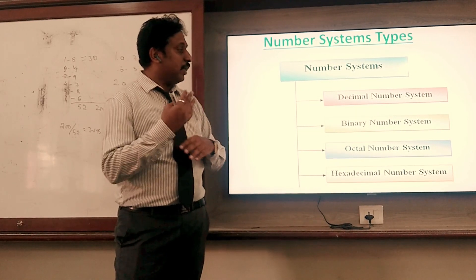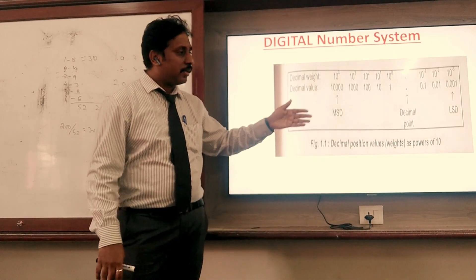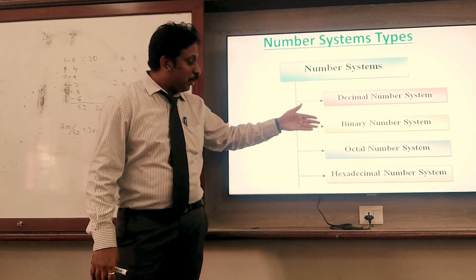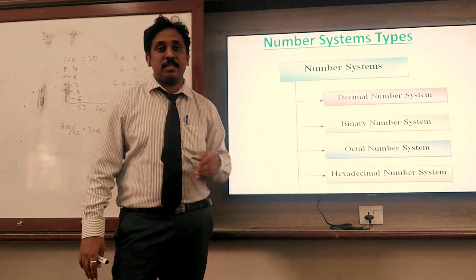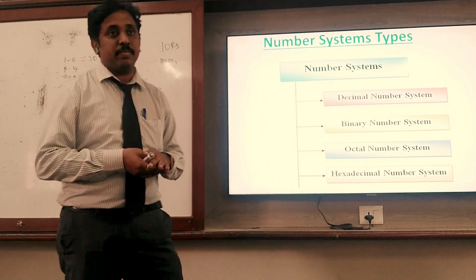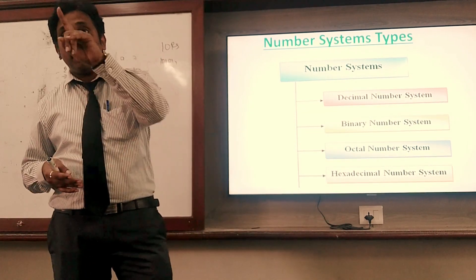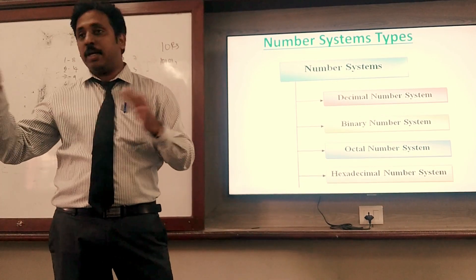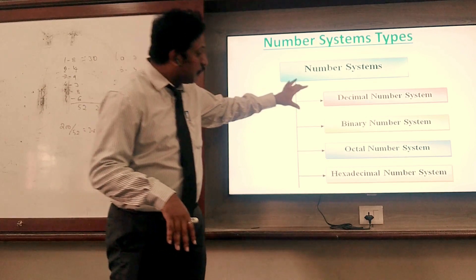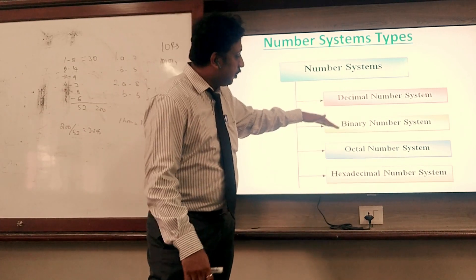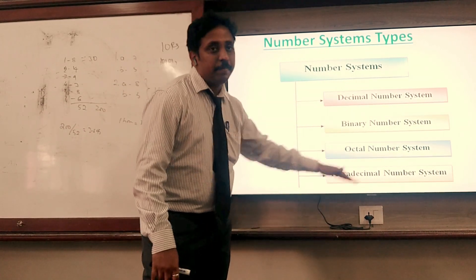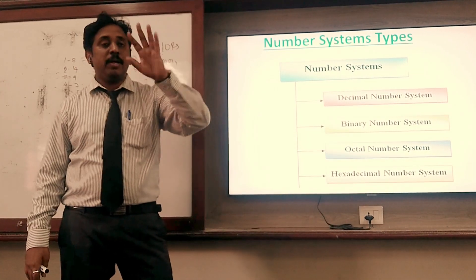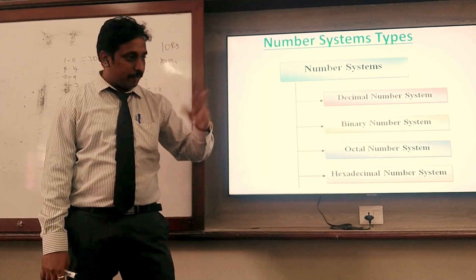You will see individually what is decimal, what is binary, what is octal, and what is hexadecimal — and also the conversions. Problems are mainly conversions. They will not ask you to explain what a number system is; you need to do the conversions — from this to this, this to this, this to this. You will see all the conversions one by one.